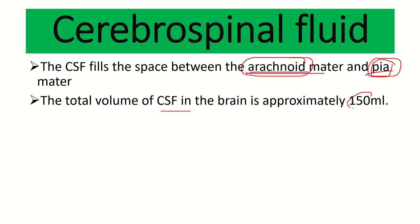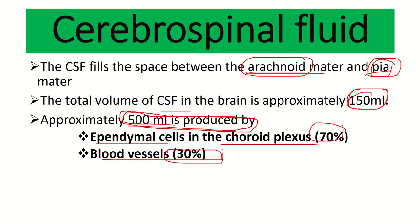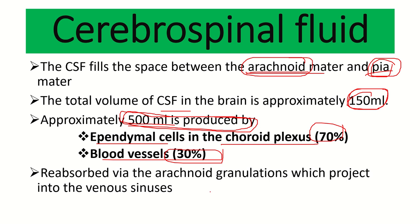The total volume of CSF in the brain is about 150 ml — we should remember this figure. Approximately 500 ml is produced every day and also reabsorbed into the blood every day. It is produced by the ependymal cells of the choroid plexus, about 70%, and also from blood vessels, about 30%.